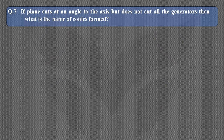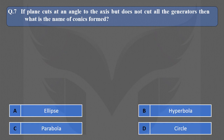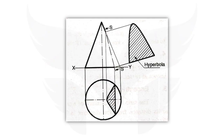Next question: If a plane cuts at an angle to the axis but does not cut all the generators, then what is the name of the conic form? In this case, the cutting plane cuts the cone at an angle such that it is not cutting all generators of the cone. The conic section obtained is called hyperbola. The correct option is B.